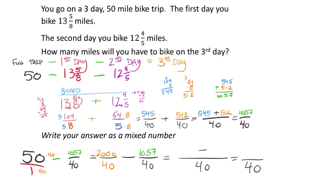Computing 2,000 minus 1,057: borrowing makes it 1,999 minus 1,057. Ten minus seven is three, nine minus five is four, nine minus zero is nine, one minus one is zero — giving 943 fortieths. That's how many miles need to be biked on the third day, but we need it as a mixed number.